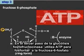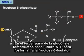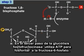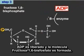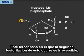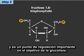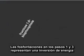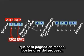In the third step of glycolysis, the enzyme phosphofructokinase uses ATP to phosphorylate fructose 6-phosphate. ADP is released, and the molecule fructose 1,6-bisphosphate is formed. This third step, in which the second phosphorylation event occurs, is irreversible and is a major regulatory point in the commitment to glycolysis. The phosphorylations in steps 1 and 3 represent an investment of energy that will be paid back in the later stages of the pathway.